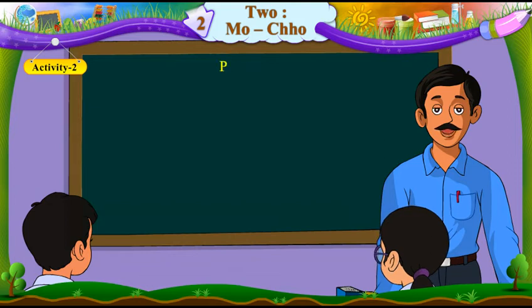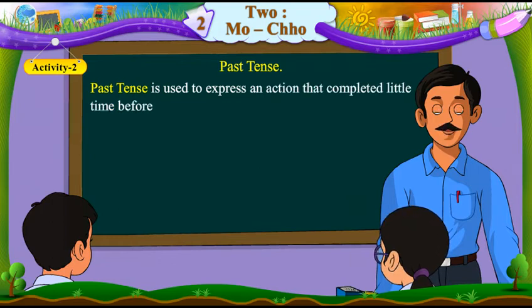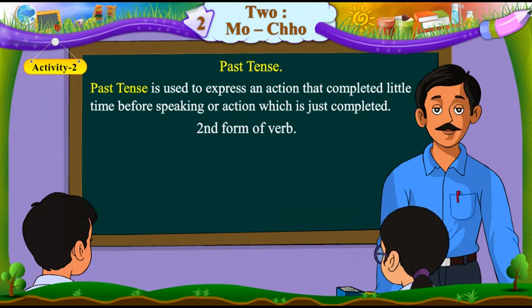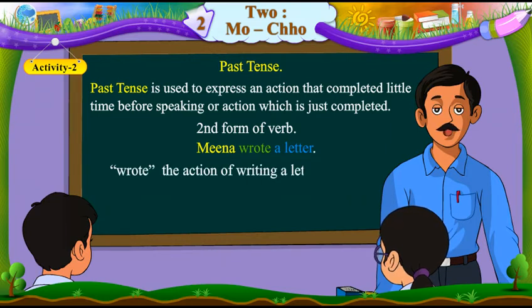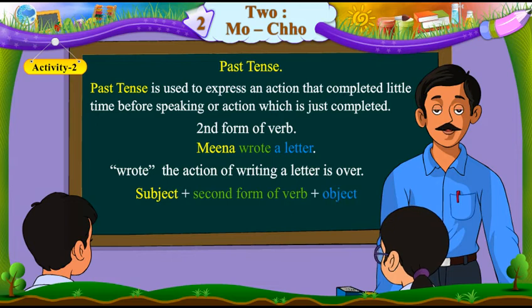Now, let's understand past tense. Past tense is used to express an action that is completed — a little time before speaking, or an action which is just completed. Hint: second form of verb is used. For example, Meena wrote a letter — 'wrote' tells that the action of writing a letter is over. The format of past tense is subject plus second form of verb plus object. Come on, students, give me some more examples. Nidhi, you give me one example. I ate an apple. Very good. Krupa, you give one example. Krupa sang a song. Excellent.